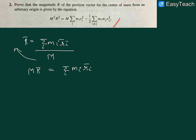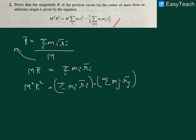Now I will square both sides, so M² R² equals the summation of m_i r_i (vector) dotted with the summation of m_j r_j (vector). I have changed notation to use separate indices i and j for each particle. Multiplying this out gives a double summation over i and j.